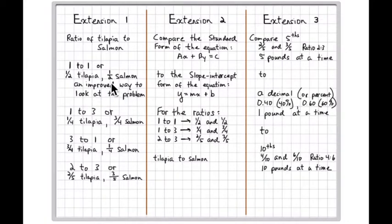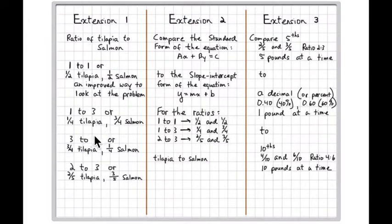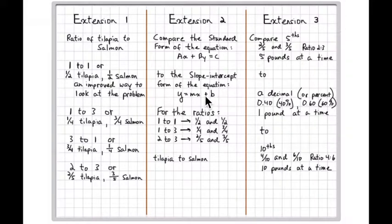In this first extension I change those ratios: half tilapia and half salmon, one-fourth tilapia and three-fourths salmon, and I switched it to three-fourths tilapia and one-fourth salmon, and finally two-fifths tilapia and three-fifths salmon. Another extension compares the standard form of the equation to the slope-intercept form using these different ratios. And finally, what happens if you move from fractions to decimal values — so forty percent tilapia and sixty percent salmon?